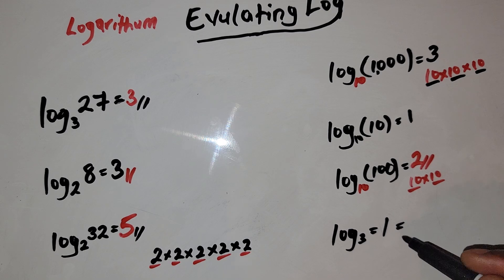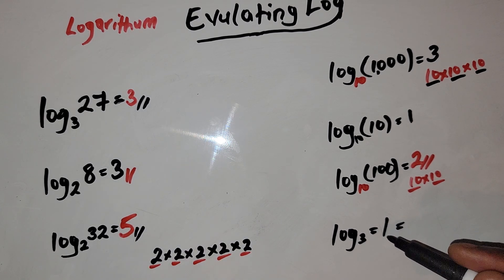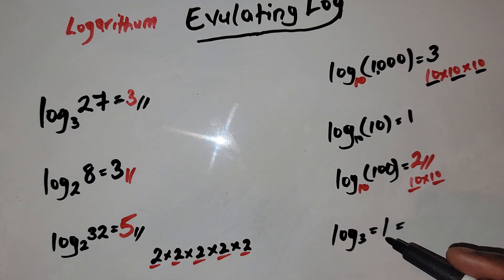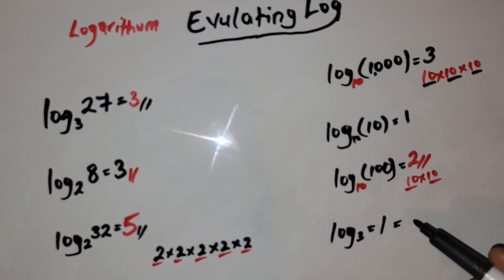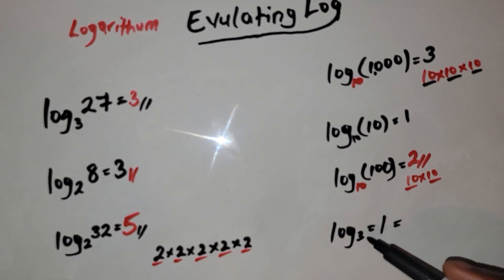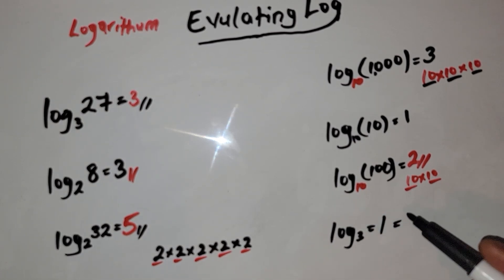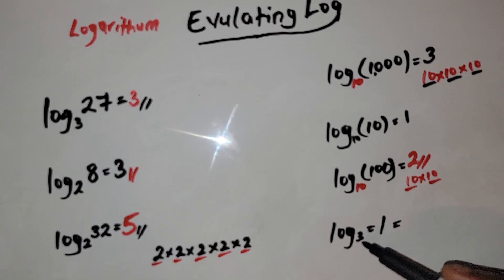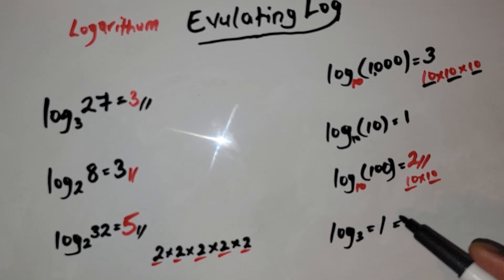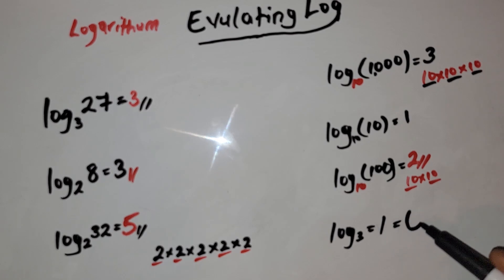For this one we have log of 1. Whenever you see log of 1, it is always equal to zero — no matter how large or small the base might be, it is always equal to zero. So this problem is zero.